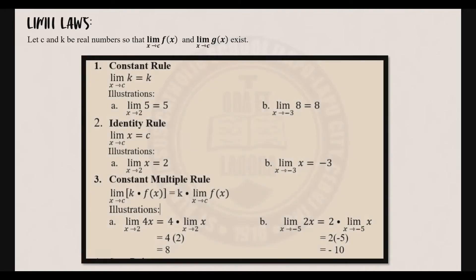Now let's have the limit laws. Let c and k be real numbers so that the limit of f of x as x approaches c and the limit of g of x as x approaches c exist.